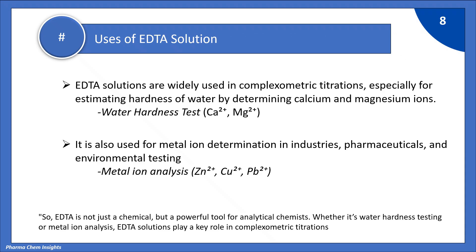Uses of EDTA solution: EDTA solutions are widely used in complexometric titrations, specially for estimating hardness of water by determining calcium and magnesium ions. It is also used for metal ion determination in industries, pharmaceuticals, and environmental testing — for example, metal ion analysis of zinc, copper, and lead. EDTA is not just a chemical but a powerful tool for analytical chemists. Whether it's water hardness testing or metal ion analysis, EDTA solutions play a key role in complexometric titration.